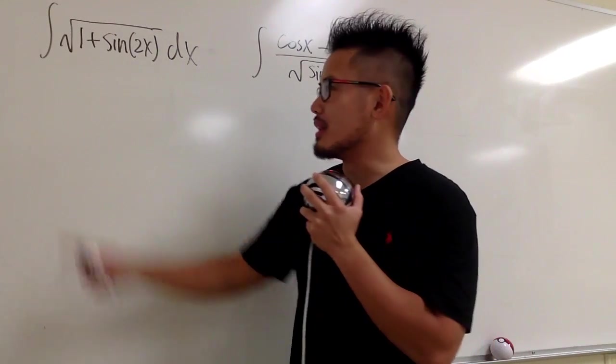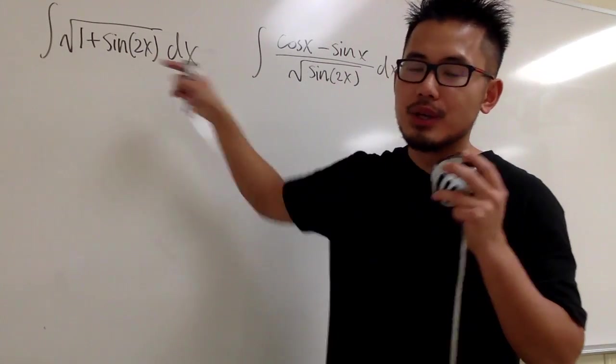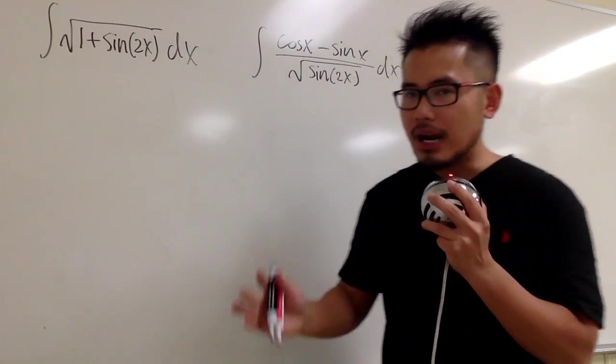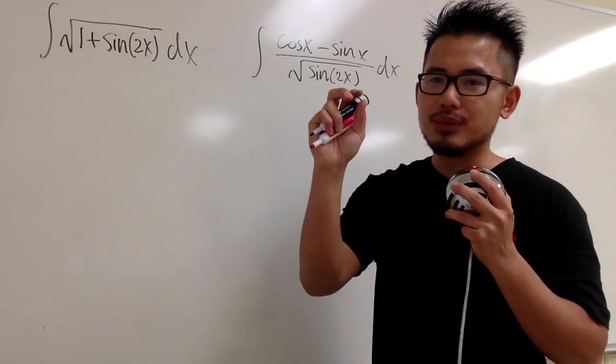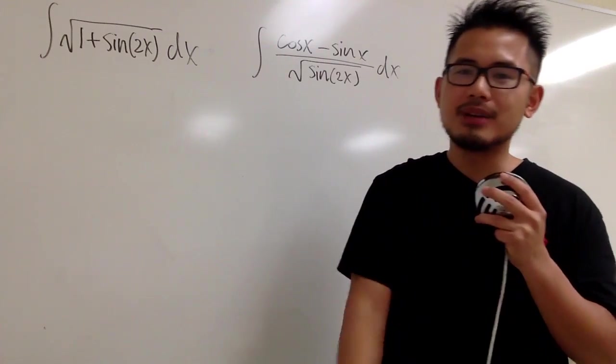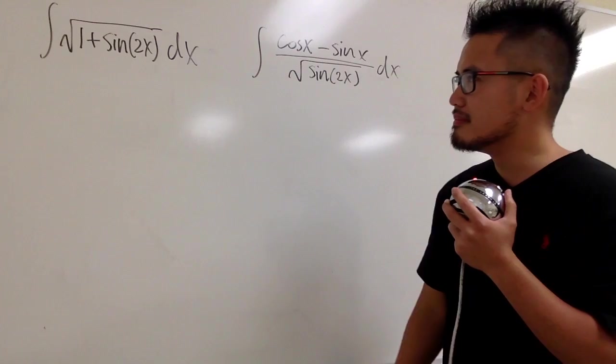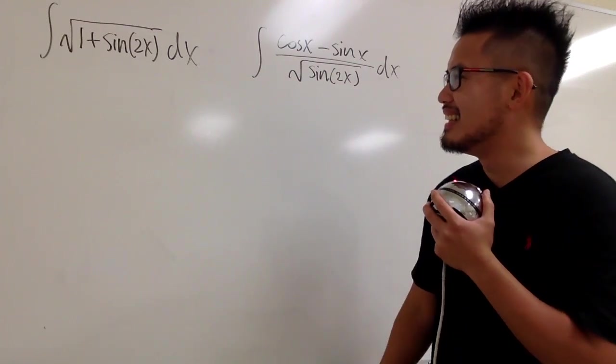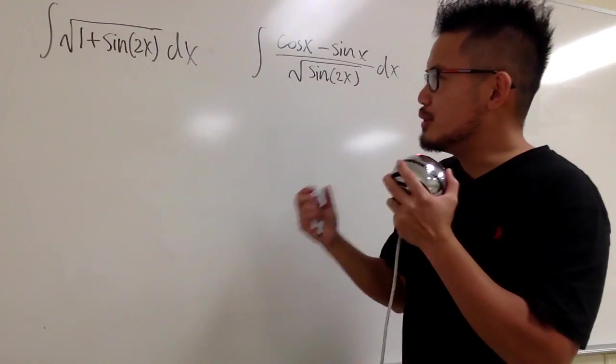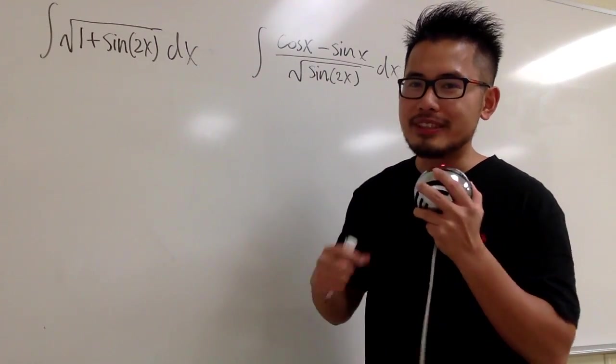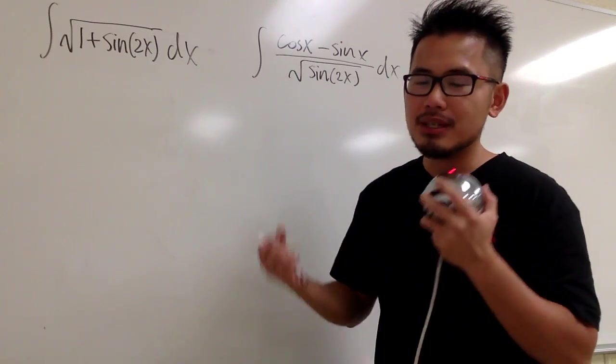Let's focus on this one, the integral of square root of 1 plus sine of 2x. What can we do? Perhaps we can multiply and divide the inside with 1 minus sine of 2x, on the top and also on the bottom. However, I do not want to do that. And now what? You see, we have the 2x inside the sine, so I just want to break it apart. I want to use the double angle formula for that.